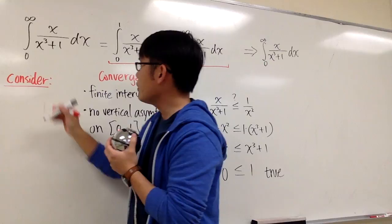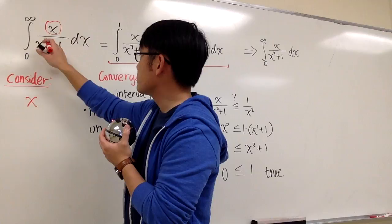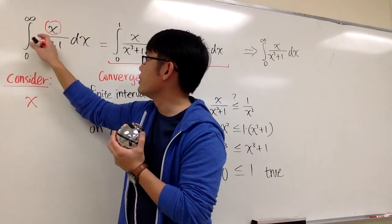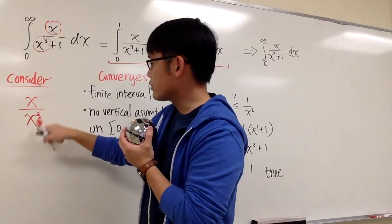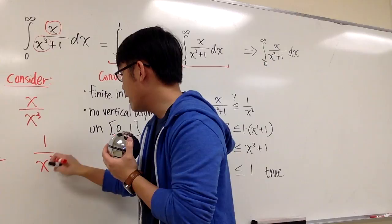We just have x on the top, and on the bottom we have x to the 3rd power plus 1. If x is approaching infinity, the plus 1 doesn't really matter, so we can just consider x to the 3rd power on the bottom. So I have x over x to the 3rd power, which reduces to 1 over x squared.